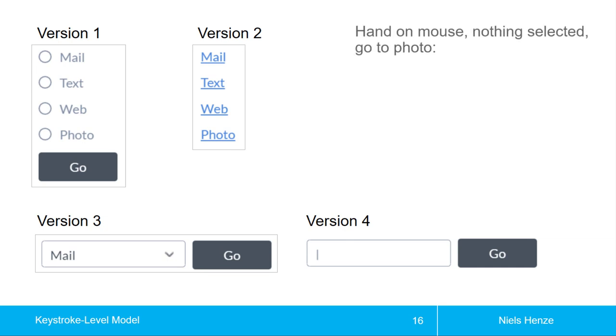Now we might wonder, how long does it take? Hands on the mouse, nothing is selected, and now we want to go to photo. Which is the fastest interface? It's actually version 2, and this is not too surprising. We look at these interfaces, and this only requires a click. The hand is already on the mouse, can't take too long. But you can use KLM to look into that in more detail.